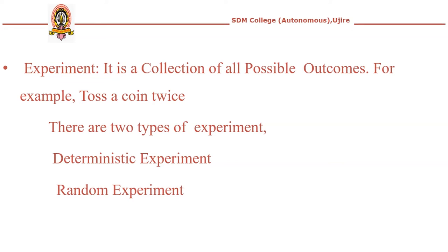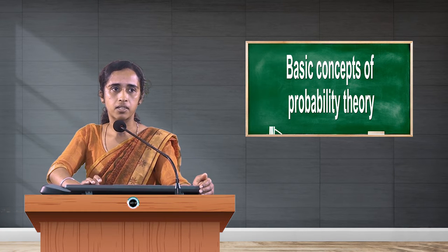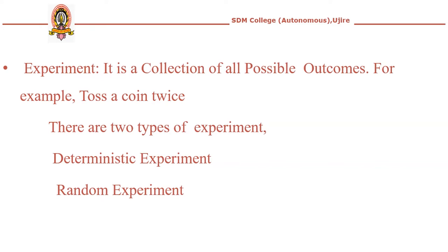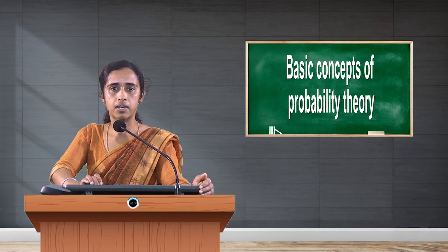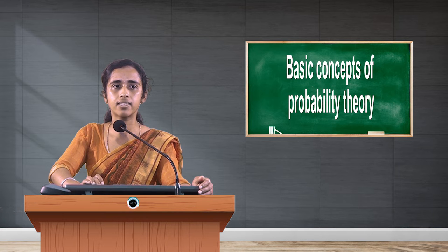In the case of an experiment, there are two types: one is the deterministic experiment and another one is the random experiment. A deterministic experiment is one whose outcome may be predicted with certainty beforehand, such as combining hydrogen and oxygen, or adding two numbers.